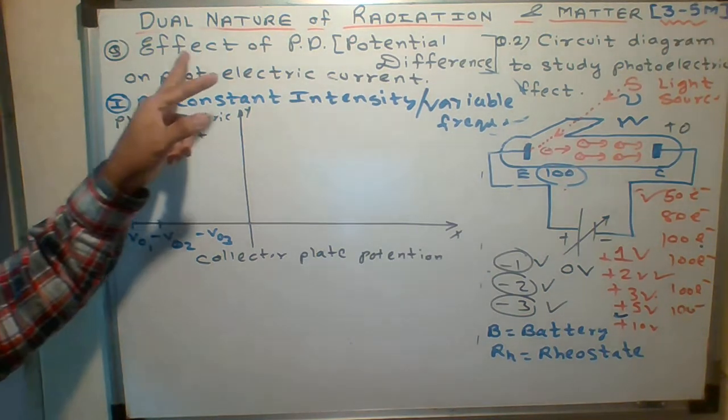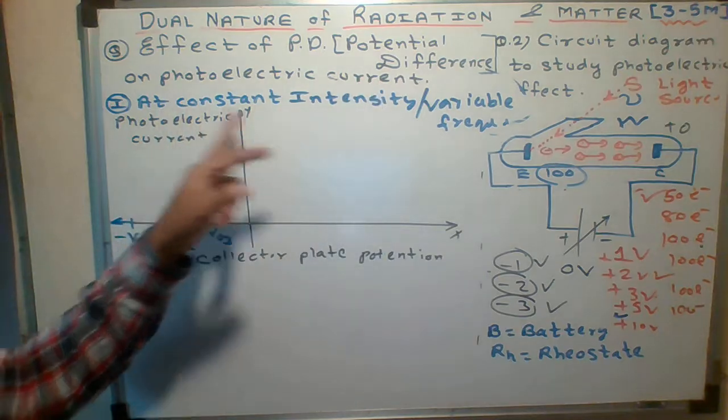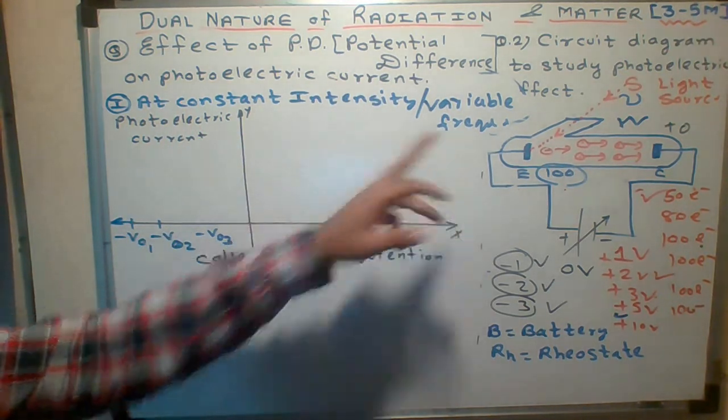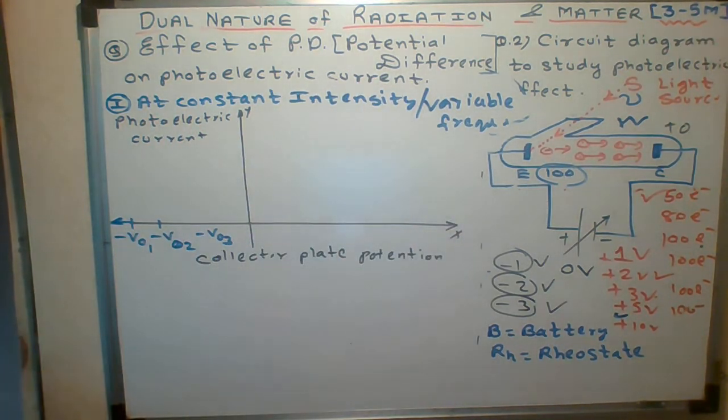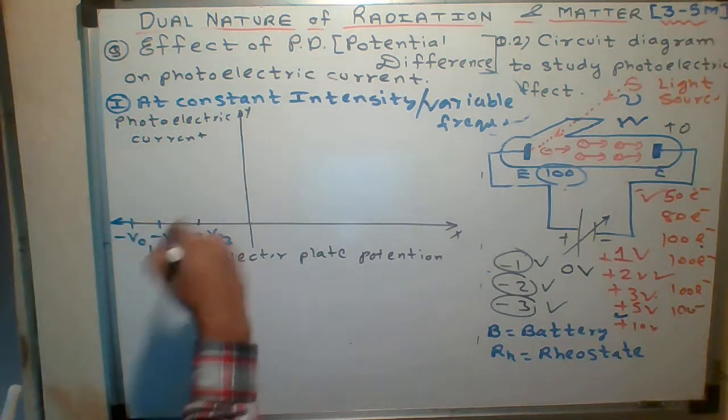So what's the next question? The next question is: what is the effect of potential difference on photoelectric current at constant intensity but variable frequency? As I told you, for one particular frequency, what do you observe? We observe that this particular graph...